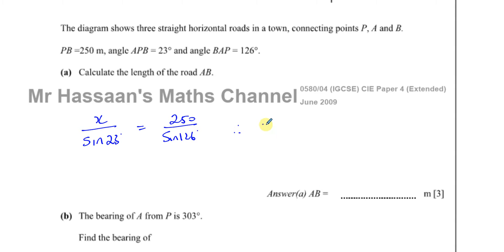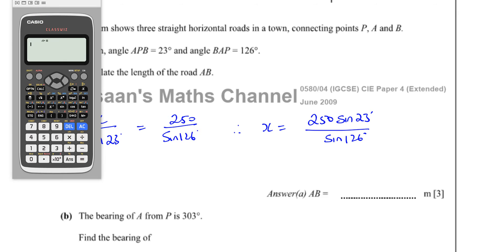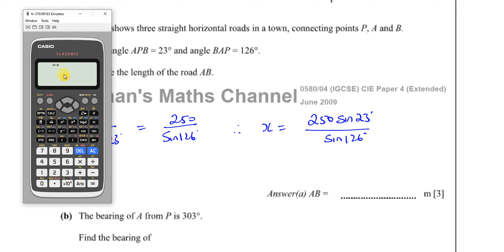Therefore x equals 250 times the sine of 23 over the sine of 126 degrees. I'll just take my calculator and make sure I'm in degree mode, which I am, and set this up: 250 times sine of 23 divided by sine of 126.